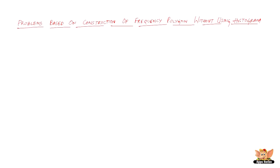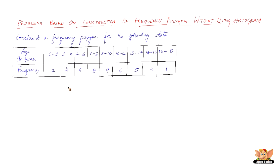In this video let us solve problems based on construction of frequency polygon without using histogram. Construct a frequency polygon for the following data. Age is given in years: 0 to 2, 2 to 4, and so on. Frequency is given as 2, 4, 6, 8, and so on.